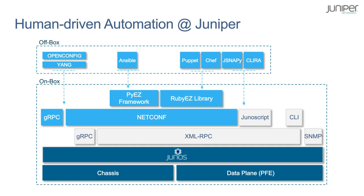Above NetConf is where we get into some of the more interesting automation tools like PyEZ, Puppet, Chef, SaltStack, and so on. Puppet, Ansible, and Chef exist at a slightly higher level of abstraction than PyEZ — they reside directly on top of or make use of a library like PyEZ. PyEZ is a Python library that we provide to allow other people to build tools on top of it. Those tools can be things like Puppet, Ansible, and Chef. And the end user can build additional tools on top of those as well.